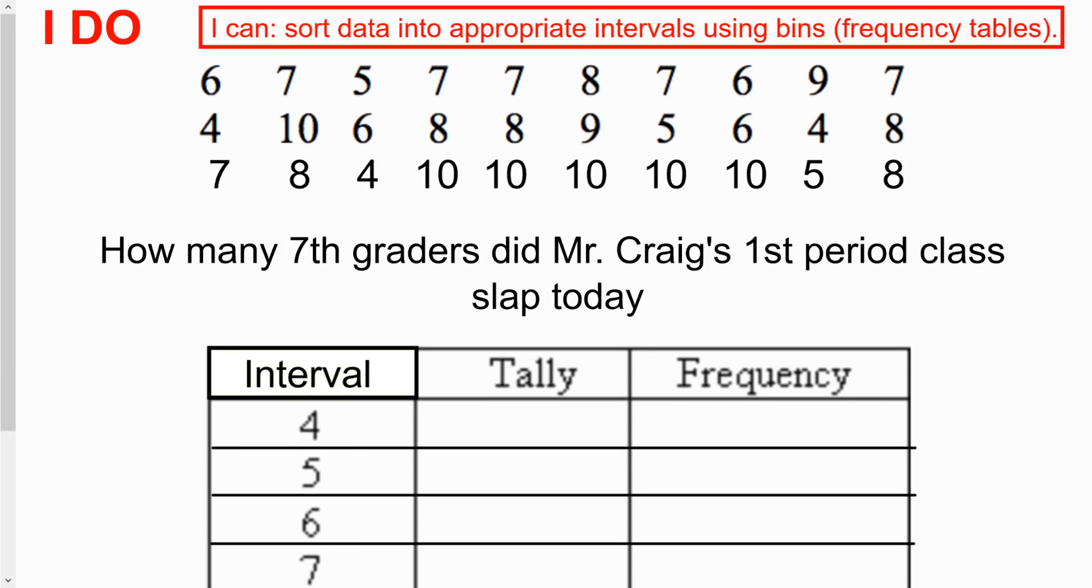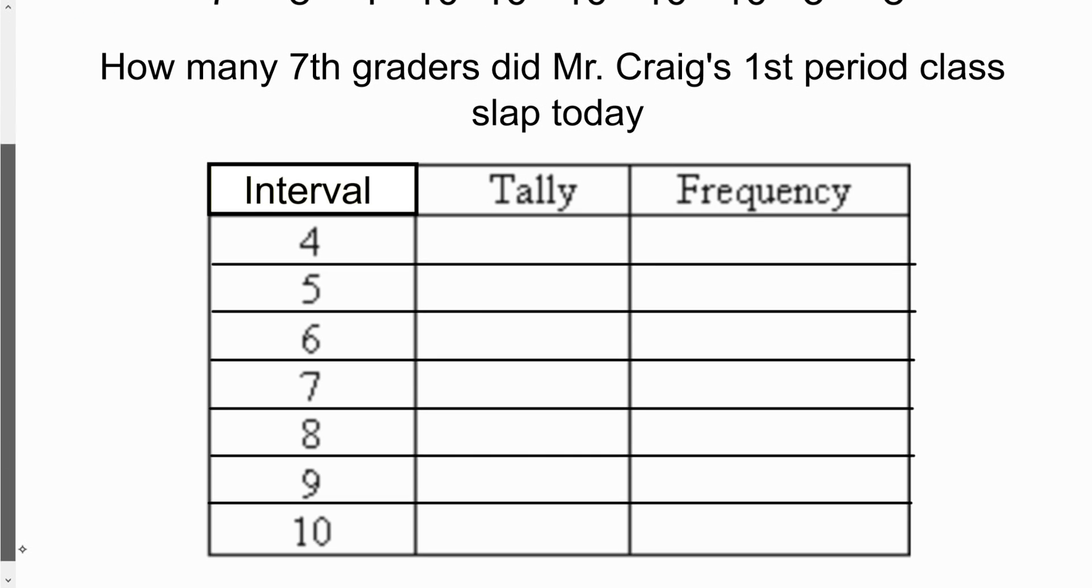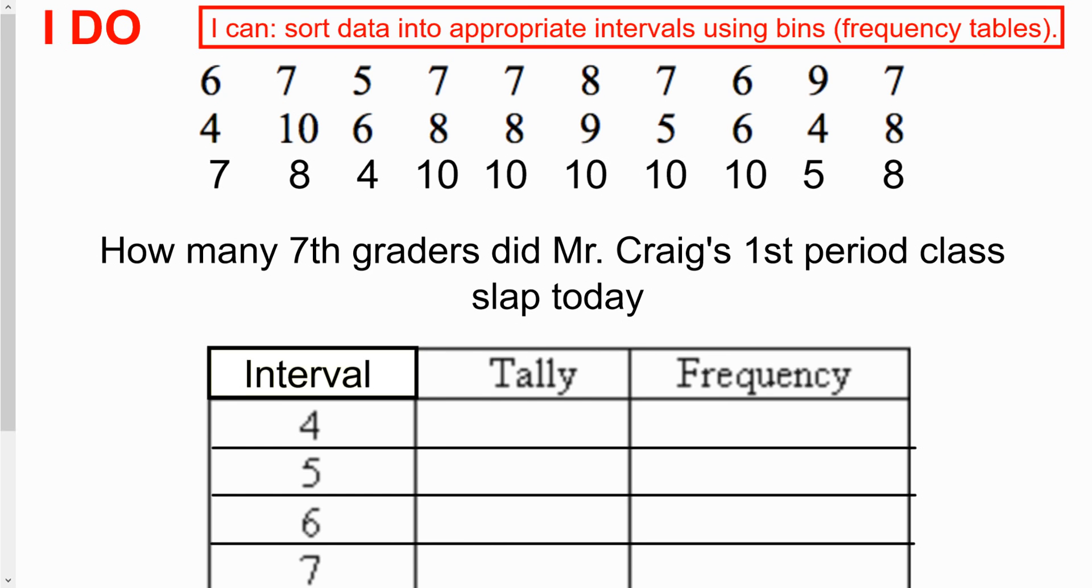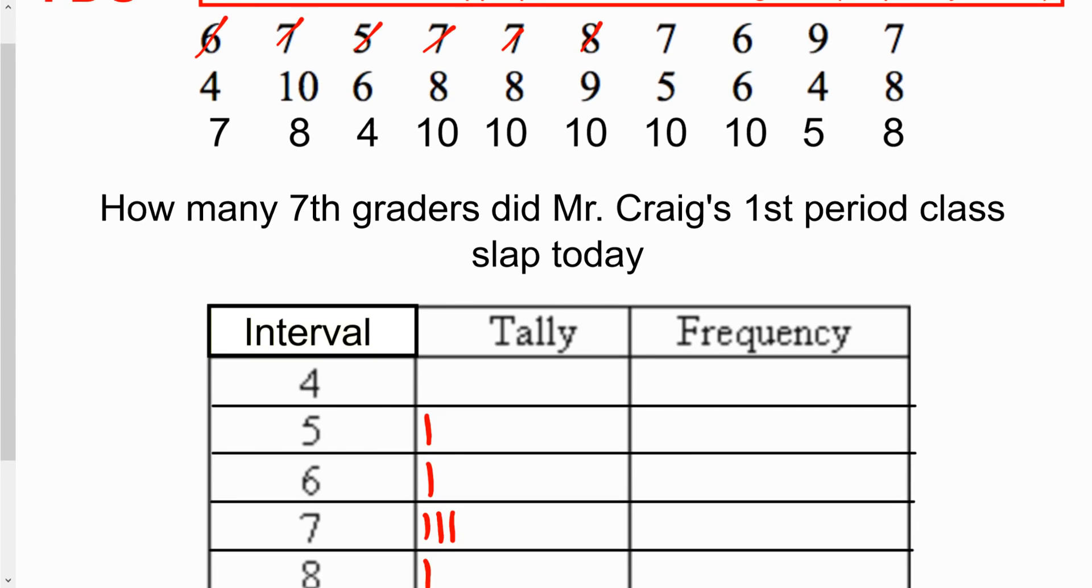You'll notice that the lowest value that is actually in here is a 4. And then the highest value is 10. So what we're going to do is we're going to put a tally for every single time we see one of these show up. I'm going to cross off as I go. I'm going to say, well, there's a 6 here. So I'm going to put a tally in for 6. Then 7, 5, 7, 7. Notice that each time I make a tally, I'm crossing something off. I've got an 8 here.